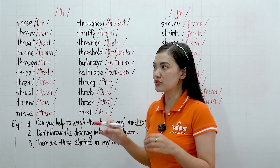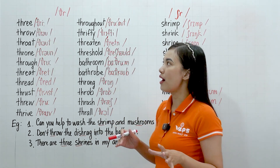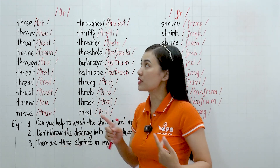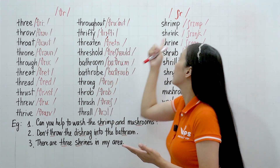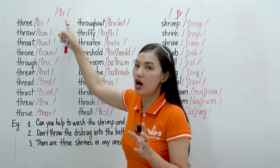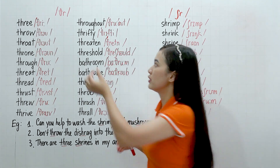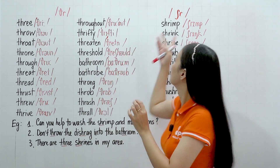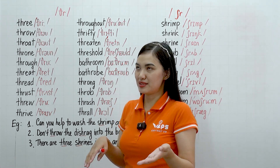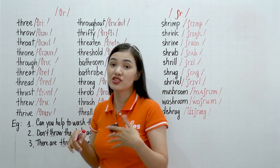These two sounds, I have to say, are really difficult. Why? Because two consonants together — the TH and the R — they are already difficult. And R is difficult too. That's why when two of them go together, we feel that it is too hard, too difficult. But just go slowly.